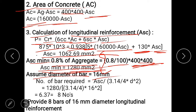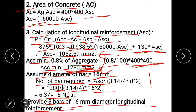Assume diameter of bar is 16 mm. Number of bars = ASC / (π/4 × d²) = 1280 / (π/4 × 16²) = 6.37. Since we consider only even numbers of bars, provide 8 bars of 16 mm diameter as longitudinal reinforcement.